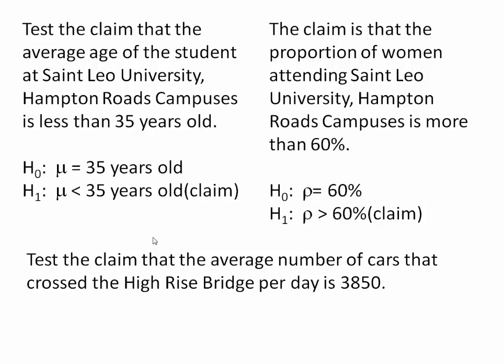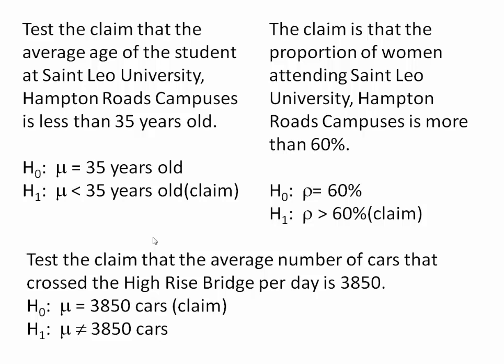In our third example, we're going to test the claim that the average number of cars that cross the bridge per day is 3,850. Since the claim states that the average is equal to 3,850, it gives us our null hypothesis directly. Therefore, our alternative hypothesis is that the mean is not equal to 3,850 cars.